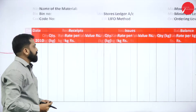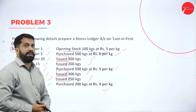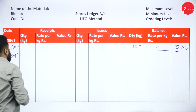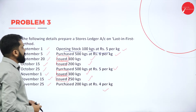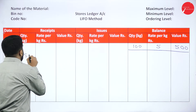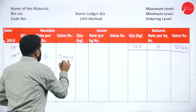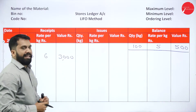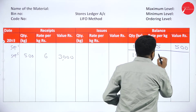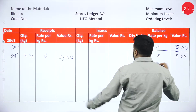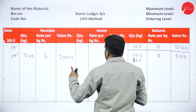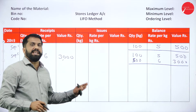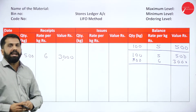Next: purchased 500 kg at Rs 6 per kg, purchased on September 5th. In the receipt column — quantity 500, rate 6, value 3000. For the balance, we write as it is: 100 multiplied by 5 — copy paste from opening — and whatever you have purchased, 500 multiplied by 6, it is 3000. Same as what we were doing in FIFO, same thing we follow in LIFO also.